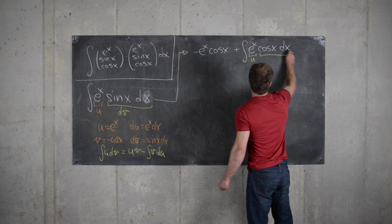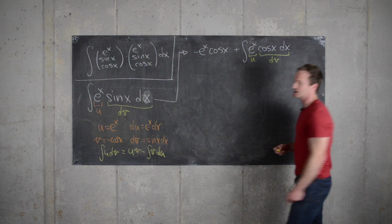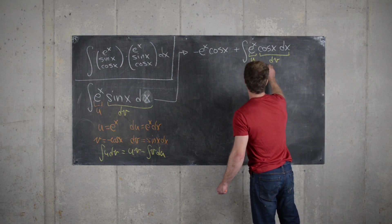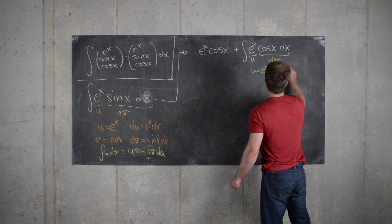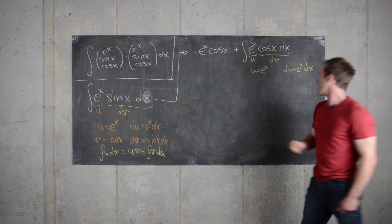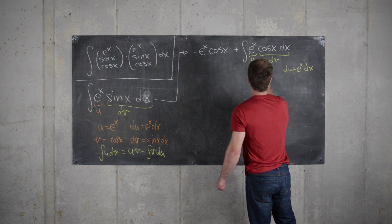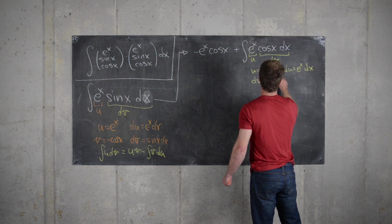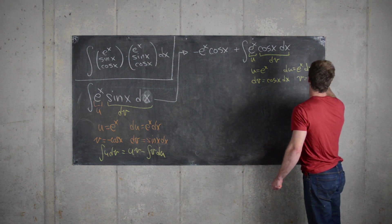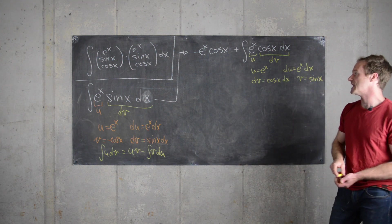Let's let this be u and let's let this be dv and see what happens. So if that's u, u is e to the x, that means du is again e to the x dx. And then if dv equals cosine x dx, that means v equals sine x. And now we're all set.